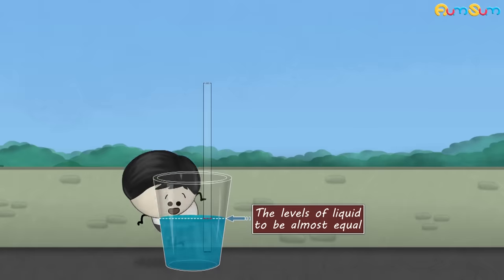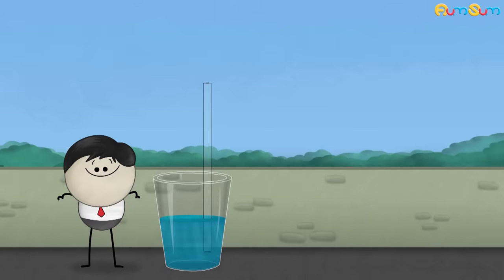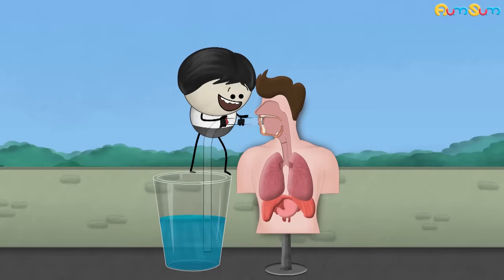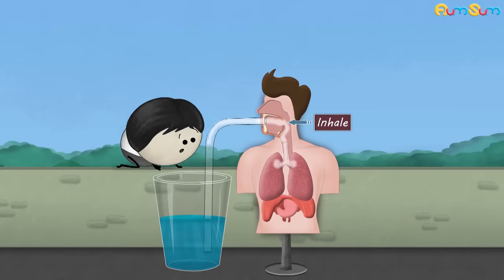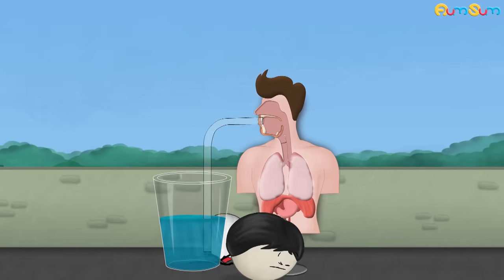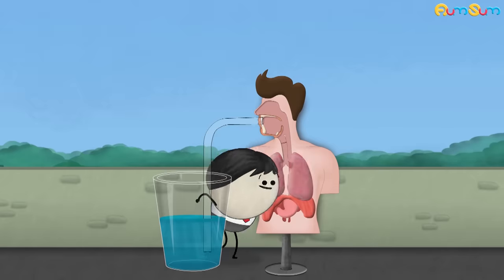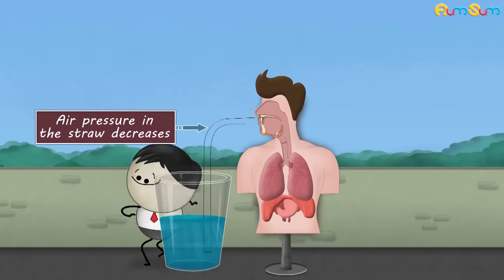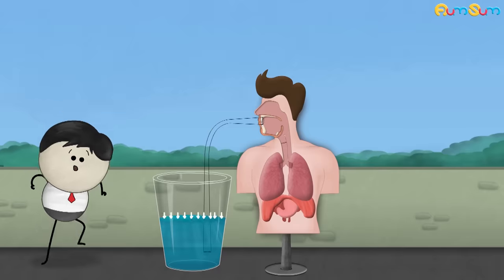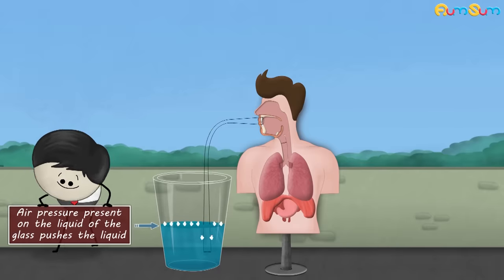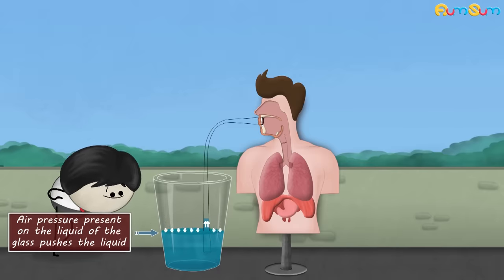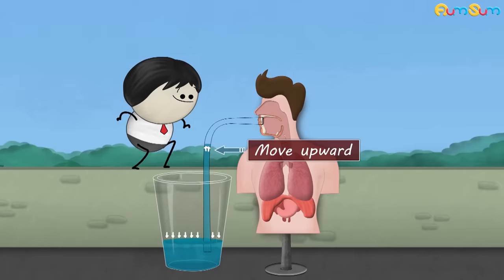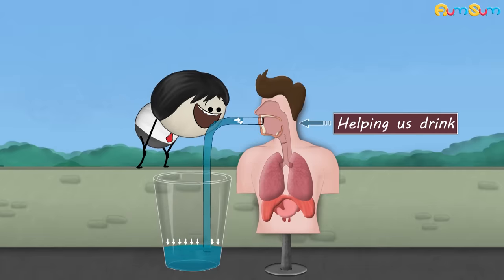This causes the levels of liquid to be almost equal. However, when we drink the liquid through a straw, we first inhale, causing the air from the straw to flow into our lungs. Now, due to the absence of air, the air pressure in the straw decreases. Hence, the air pressure present on the liquid of the glass pushes the liquid into the straw, causing it to move upwards and thus helping us drink.